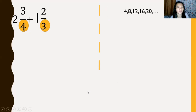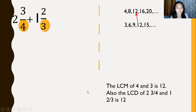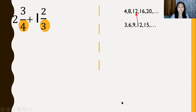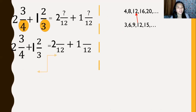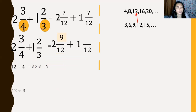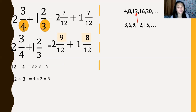Step three: solve. We have denominators 4 and 3. The LCM of 4 and 3 is 12, so the LCD is 12. To get the numerators: 12 ÷ 4 = 3, times 3 = 9; and 12 ÷ 3 = 4, times 2 = 8. Now we add: 9 + 8 = 17. The whole numbers: 2 + 1 = 3. So we have 3 and 17/12.